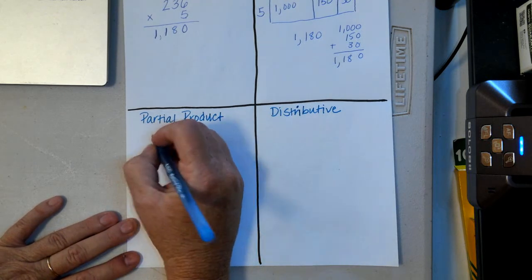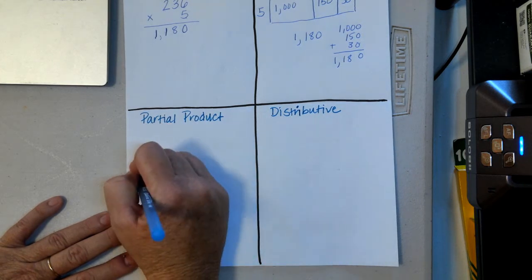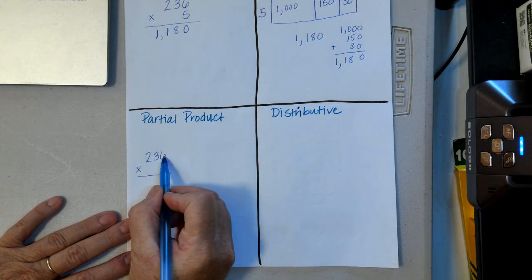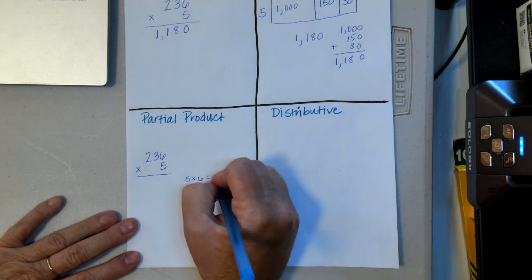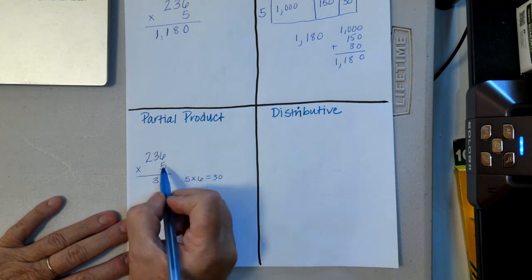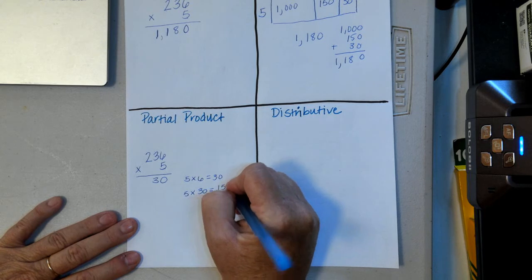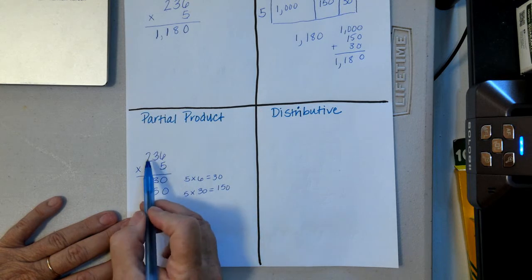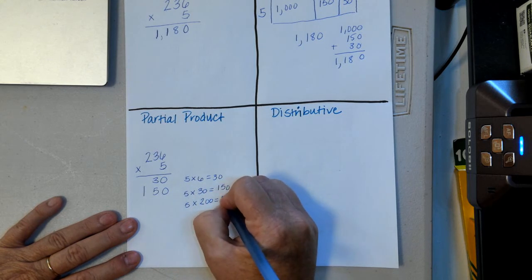Now let's do the partial product method — it's kind of like the area model but written a little differently. I'll write 236 times 5. First I multiply five times six ones: five times six equals thirty ones. Then I do five times thirty, which gives me one hundred and fifty. Then I do five times two hundred, which gives me one thousand.